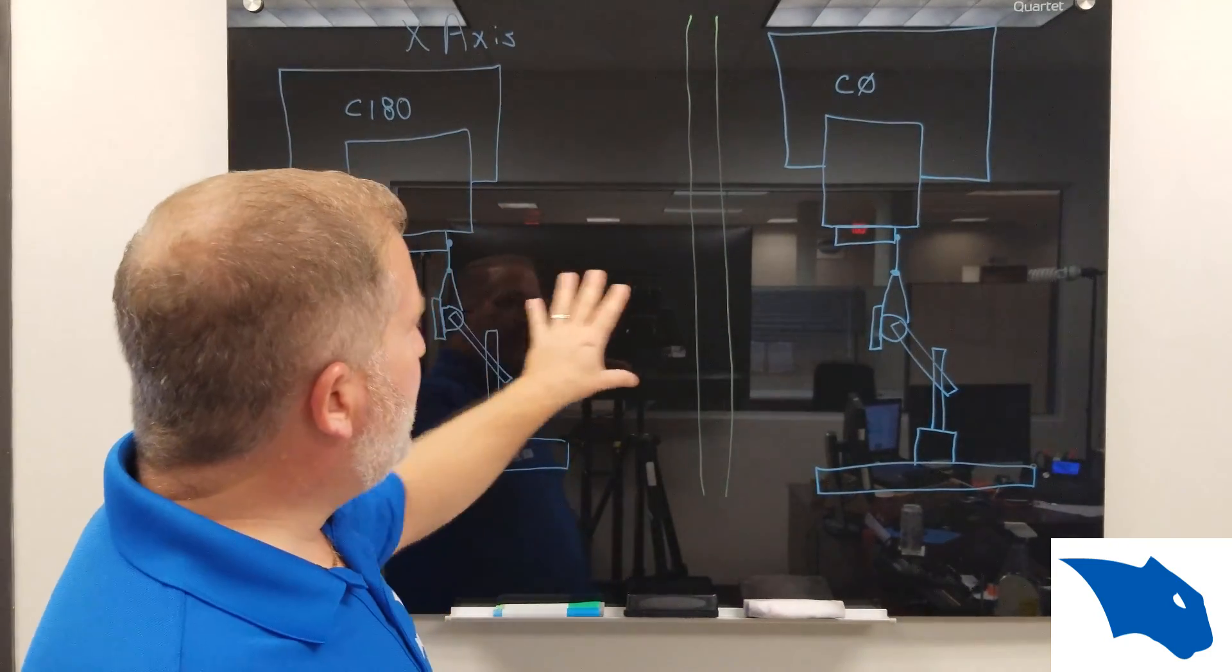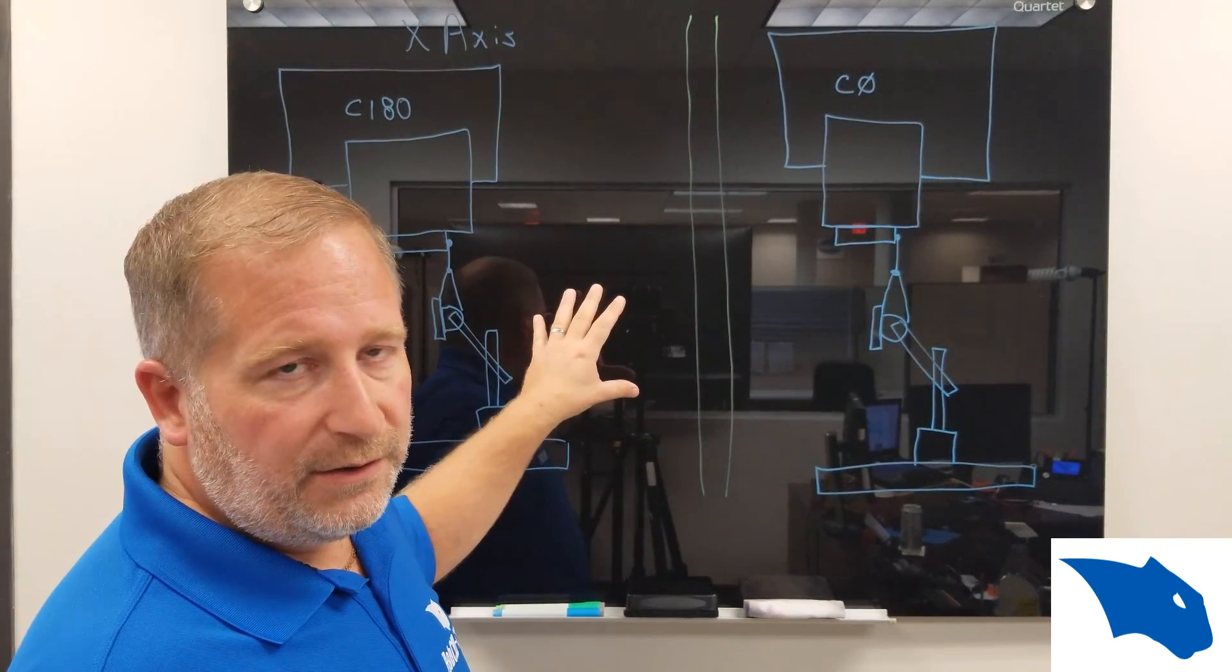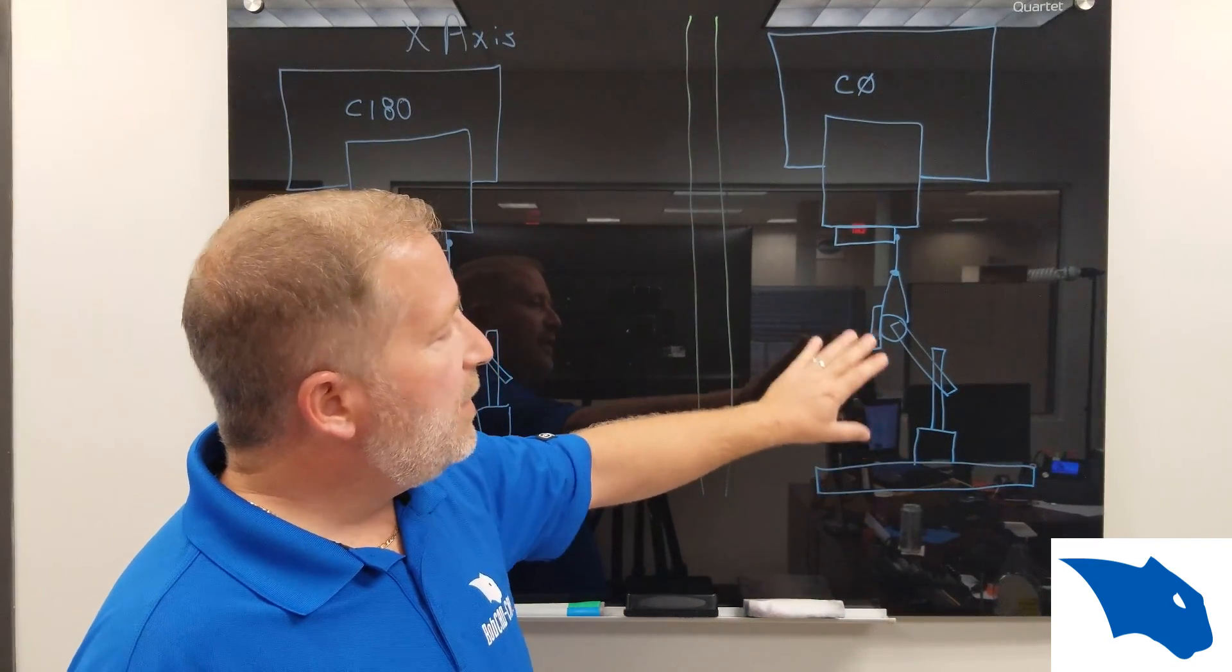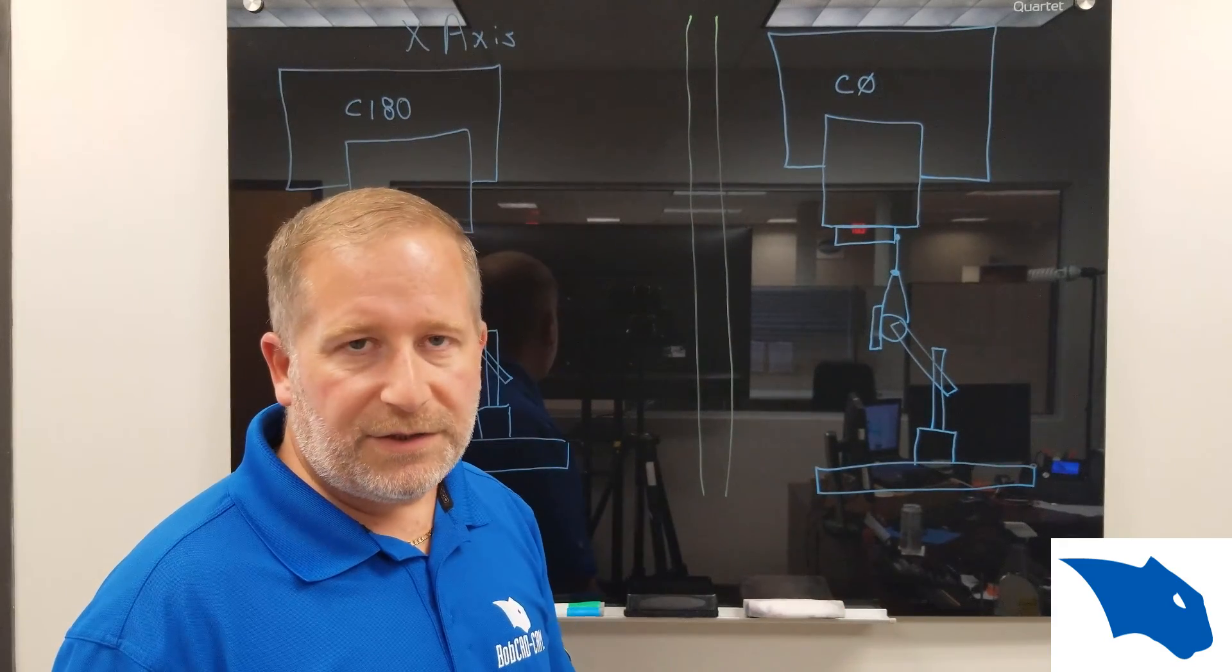So once you have that x position done, you can simply apply the exact same thing by setting up the indicator so that it's facing a y-axis orientation